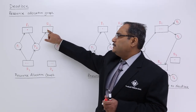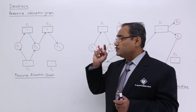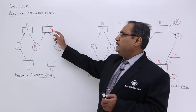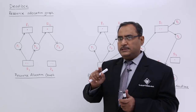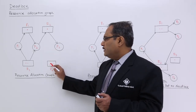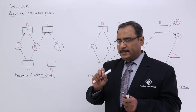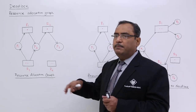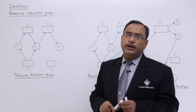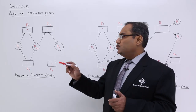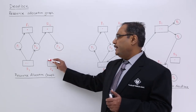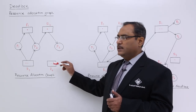Whenever a resource is non-sharable, it is denoted by a single dot inside the rectangle, meaning only one process can access it at a time — it is non-sharable and mutually exclusive. Each dot is known as an instance. If the number of instances is more than one, the resource is sharable to that extent. For example, resource R4 has two instances, so it can be allocated to two processes at a time.